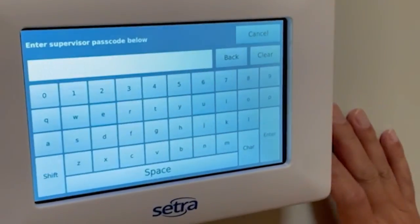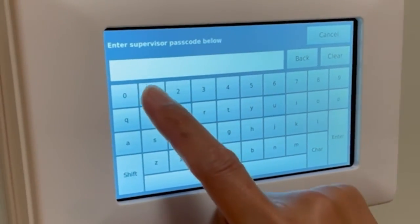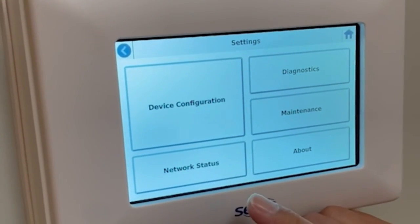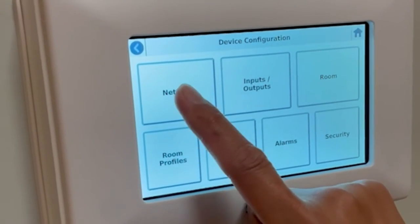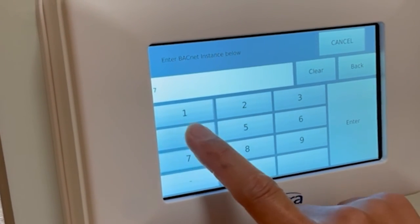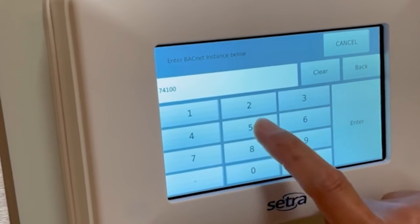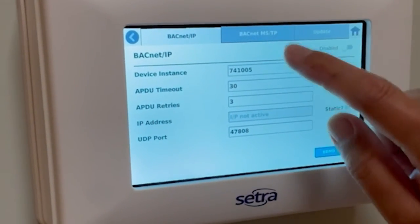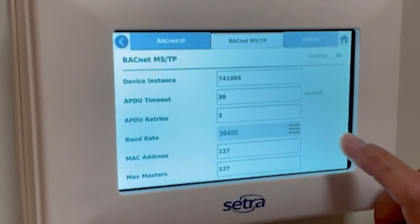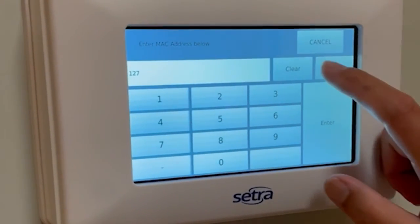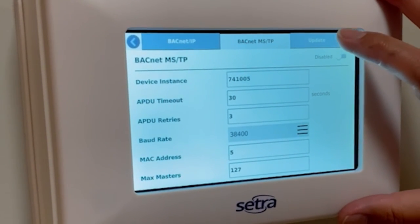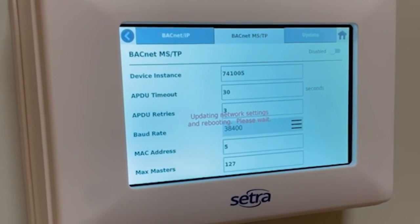We just need to configure the MSTP. First select settings, put in your supervisor passcode, device configuration, network. What we did in this case is we knew the instance ID from the previous device, so we just overrode the instance ID of this device with that. Same thing for MAC address, copying the other one. That way this easily transfers to our BAS without too much setup. We're sticking with the standard baud rate and we hit update. Monitor reboot. After that we should be able to see it on our front end.